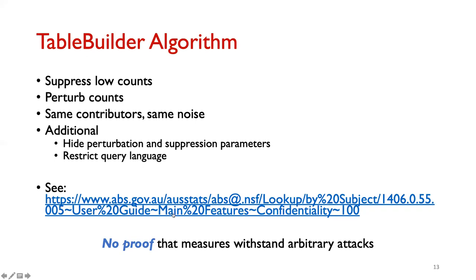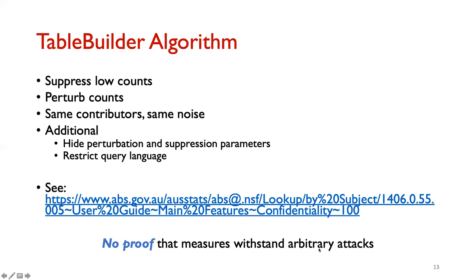Additional measures include hiding the perturbation parameter and suppression parameter, and restricting the query language to prevent analysts from constructing sophisticated queries that could circumvent the privacy mechanisms. A crucial point is that although these privacy mechanisms are used to stop specific attacks, there is no proof that they withstand arbitrary attacks — and this is what our attacks will show.